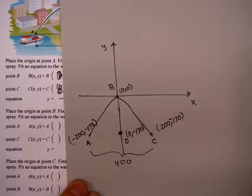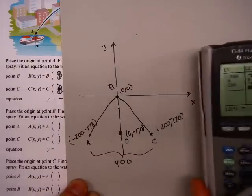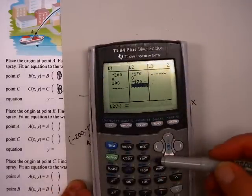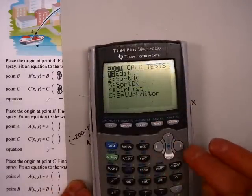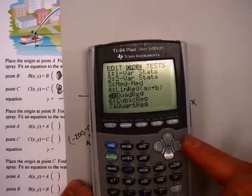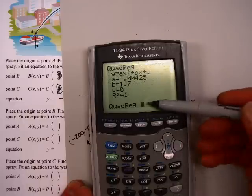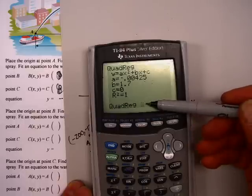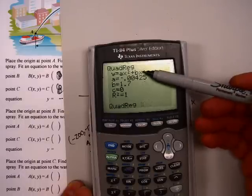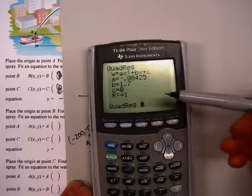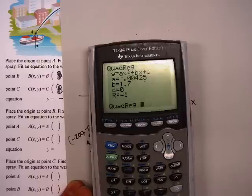And we now can find our quadratic regression. Recall how to do that. Hit stat. Go over to calc. Go down to quadratic regression. Hit enter. Again, if you have an 83, it will look like this. If you have an 84 with the updated operating system, it will say x list, y list, store regression equation, frequency, and calculate. Go down to calculate. In either case, you should get this answer.